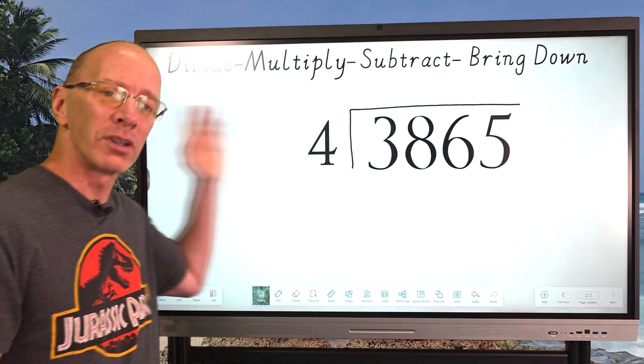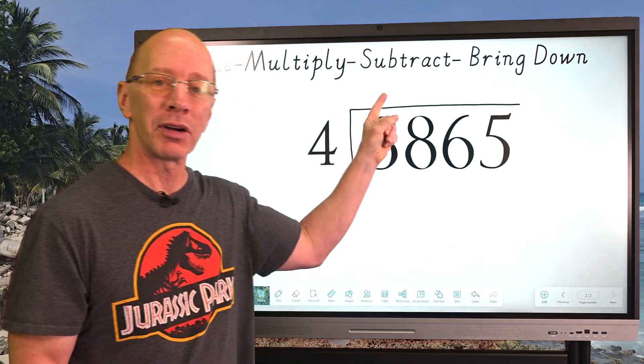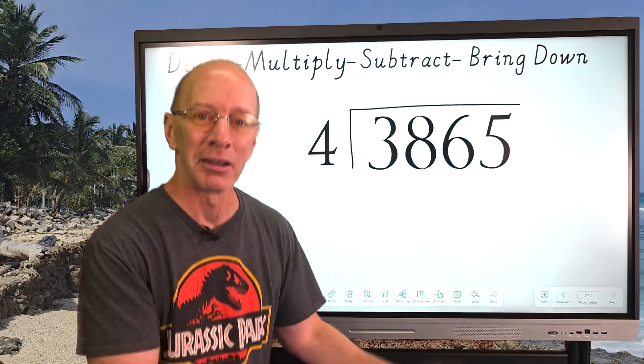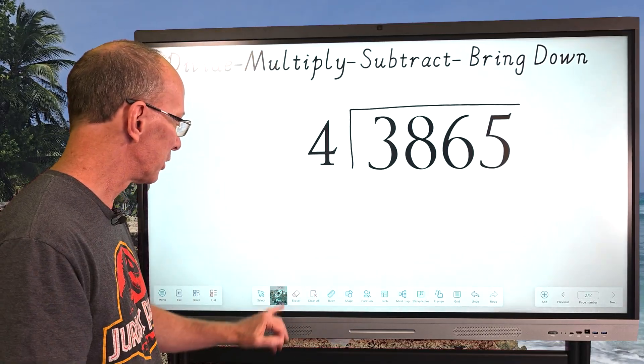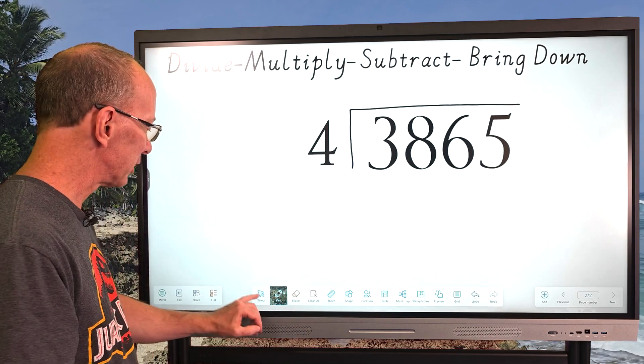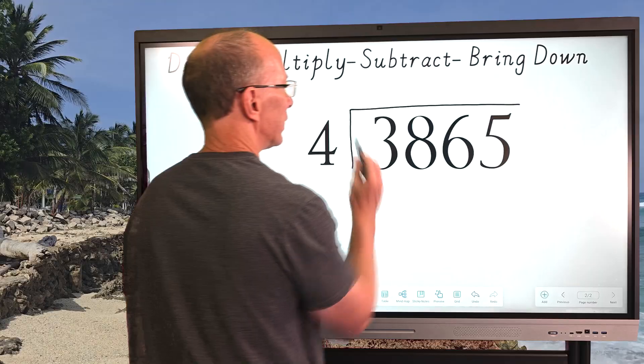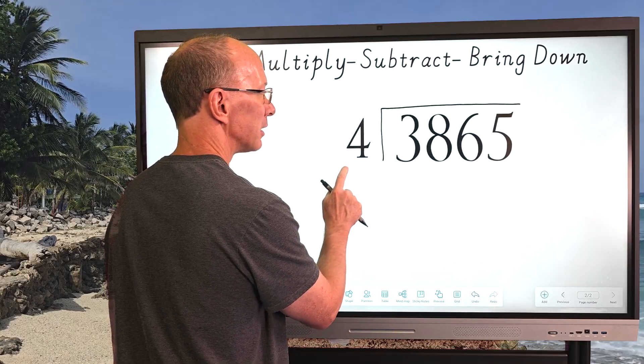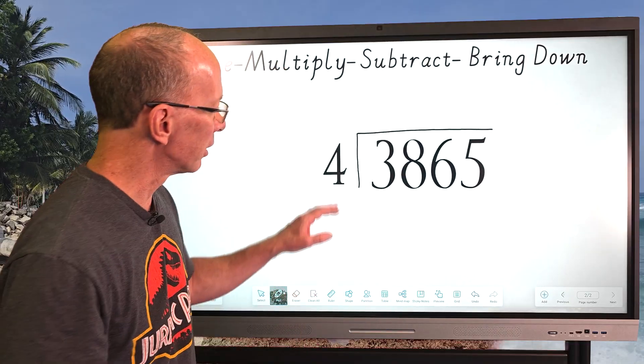So first of all, there are four steps when you are dividing. You have divide, multiply, subtract, and bring it down. I'm going to walk you through each of these steps. All right, let's get started here. Put the pen tool on, and I'm going to make this problem just a little bit smaller to work with. And I'm going to kind of scale that down just a little bit there so we can all see that. Okay, now we start.